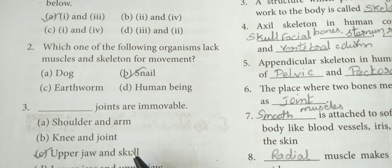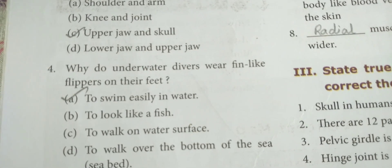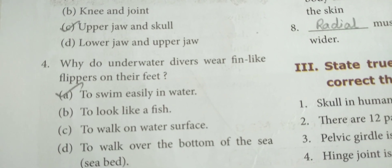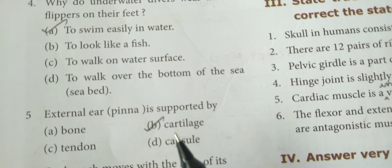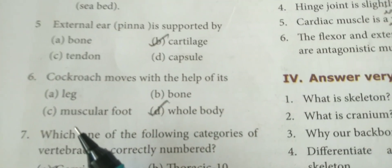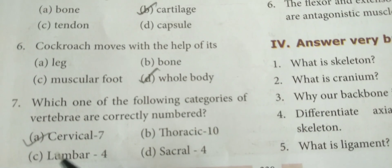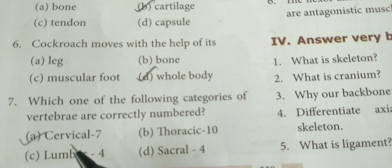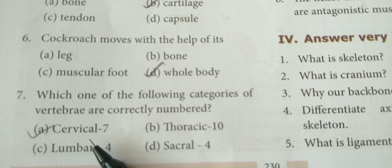Upper jaw and skull joints are immovable. Why do underwater divers wear fin-like flippers on their feet? To swim easily in water. External ear, that is pinna, is supported by cartilage. Cockroach moves with the help of its whole body. Which one of the following categories of vertebrae are correctly numbered? That is cervical — 7th.